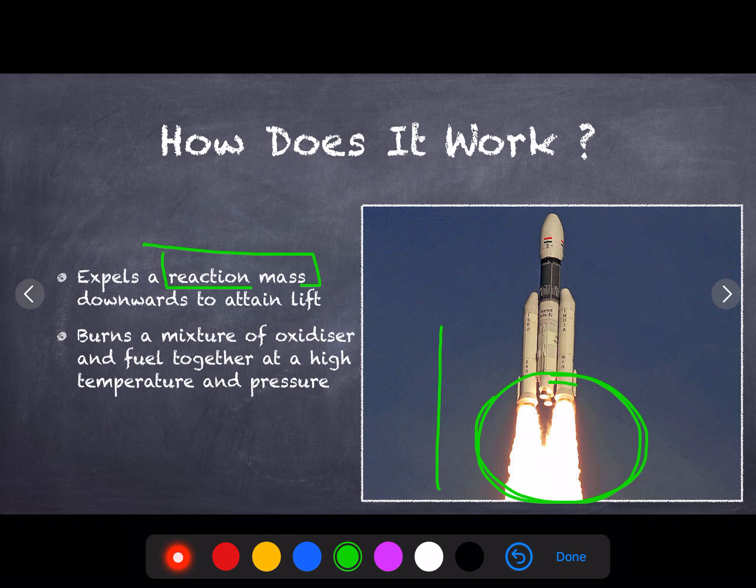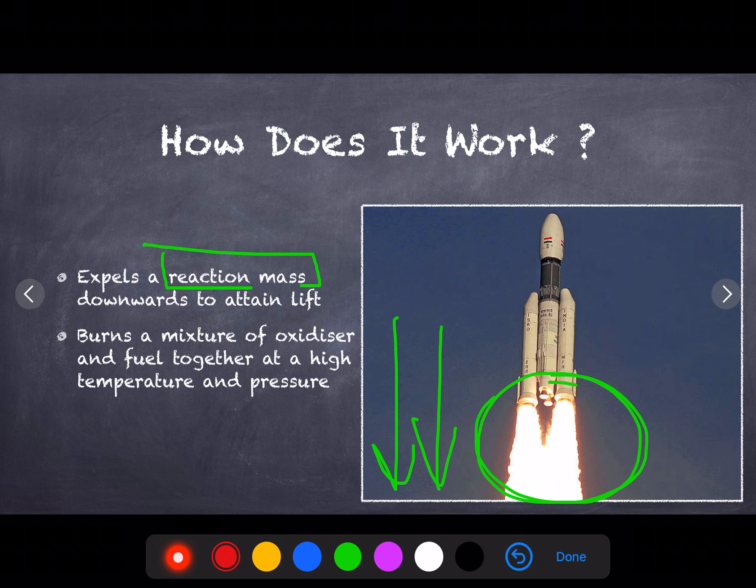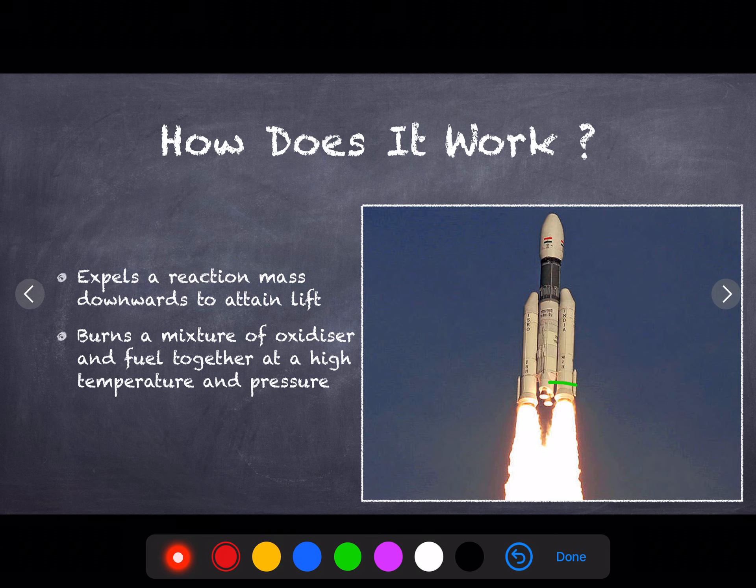you push the reaction mass downwards in the opposite direction, you get the thrust. So in the opposite direction we start moving up. This is how a rocket works - it works on Newton's principles.